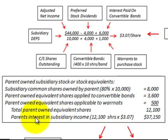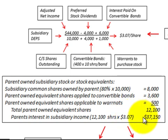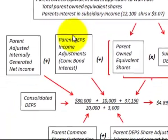From that, we calculate the parent's interest in the subsidiary's income: 12,100 shares times the $3.07 subsidiary diluted EPS gives us a total of $37,150. That is the parent's interest in the subsidiary's income.